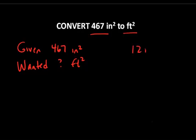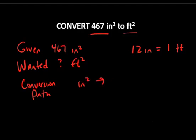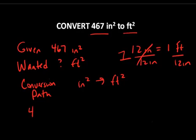So I know that there are 12 inches in every one foot. And I know here that my conversion path is from inches squared to feet squared. So I'm going to have to convert from inches to feet. So I'm going to want my foot unit to be in the numerator. So I'm going to divide both sides of this equality by 12 inches, which equals 1. So my unit factor is 1 foot per 12 inches.